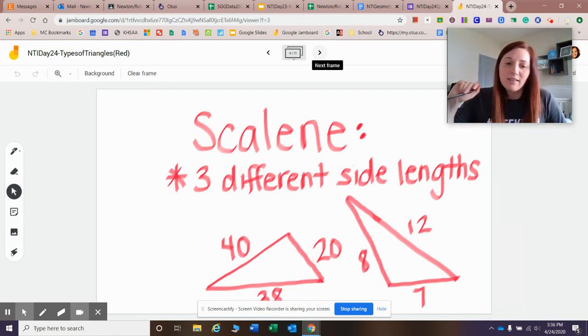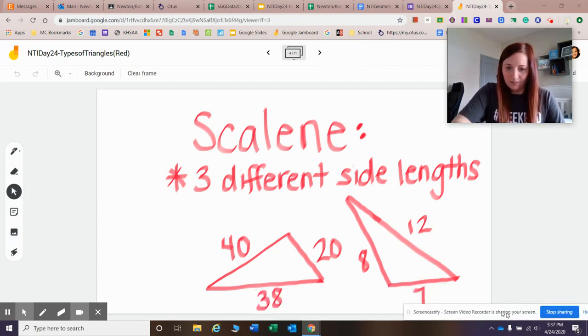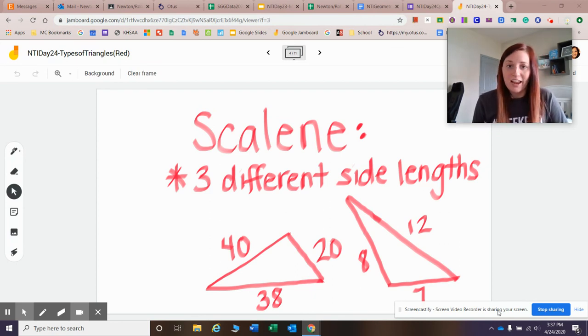Scalene means there's three different side lengths. So I went ahead and I drew in some scalene triangles. And if you look, they all have different lengths and different sides. So that would mean that they have all different size angles as well. So what I mean by that is this right here is 40, and this is 20. And this one's 38. So you never have a repeating number. All the sides are different sizes. And that's the same way for the angles.